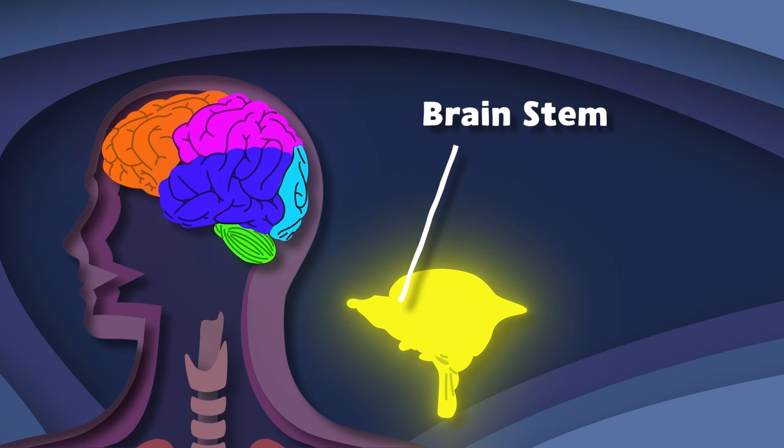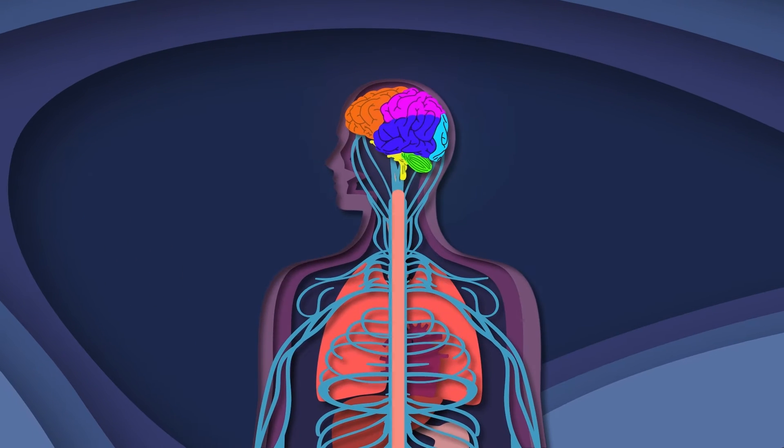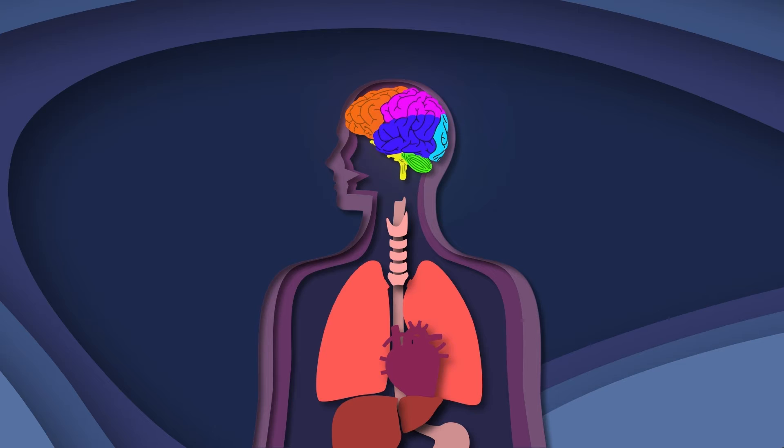Your brain stem is at the bottom of your brain, connecting brain to spinal cord to form a neural signal train. Your brain stem maintains vital control of your heart and lungs. It controls important reflexes to make sure your body runs.